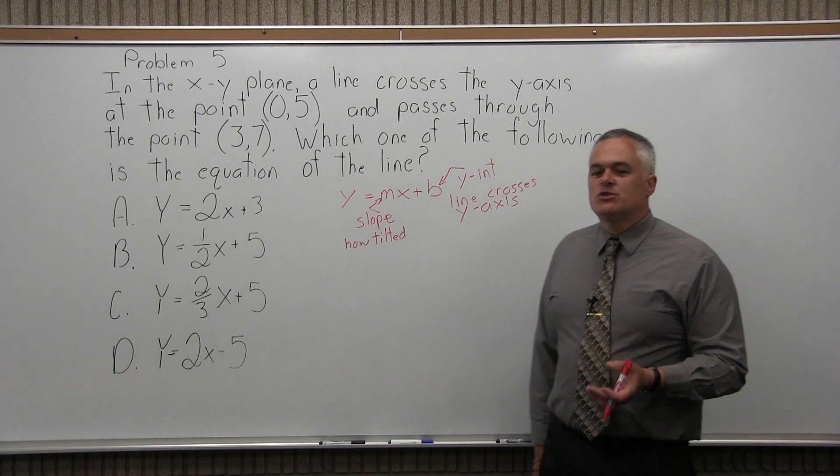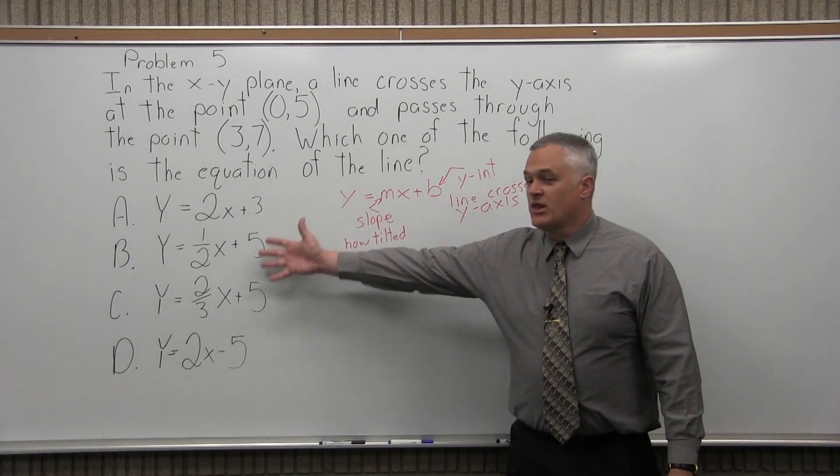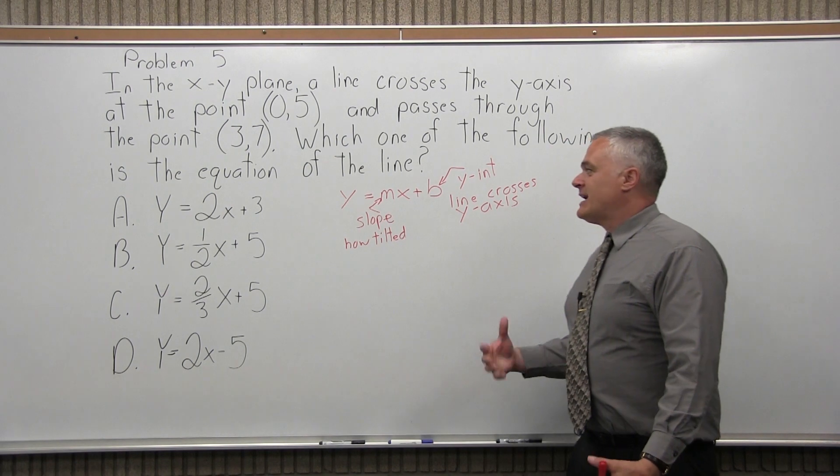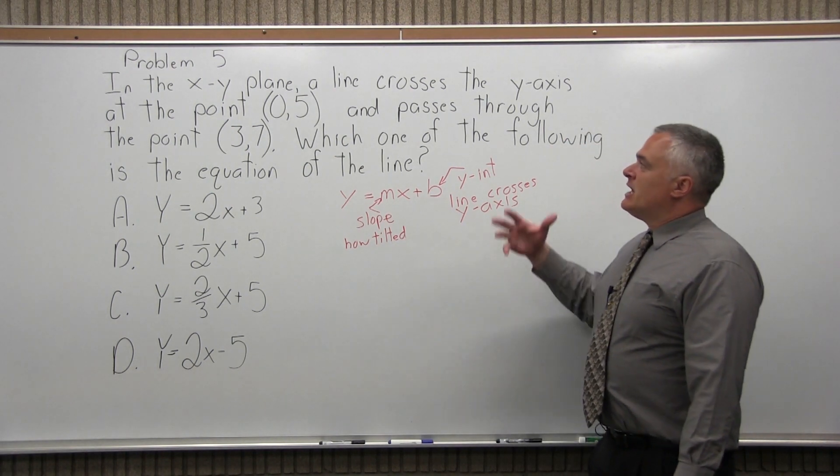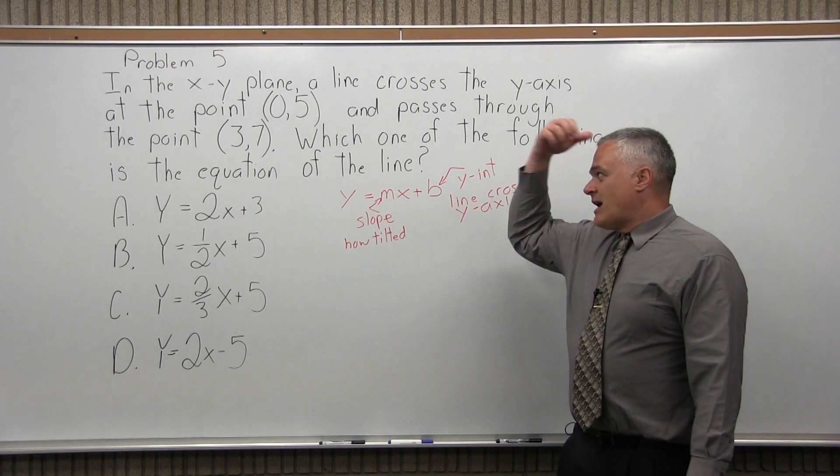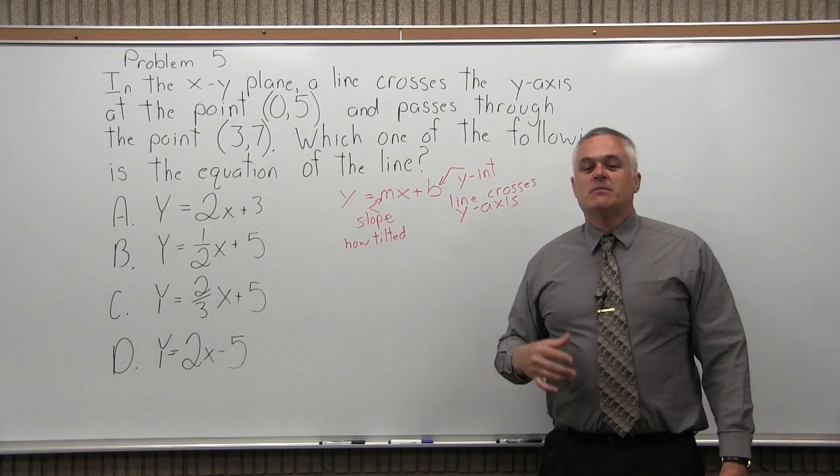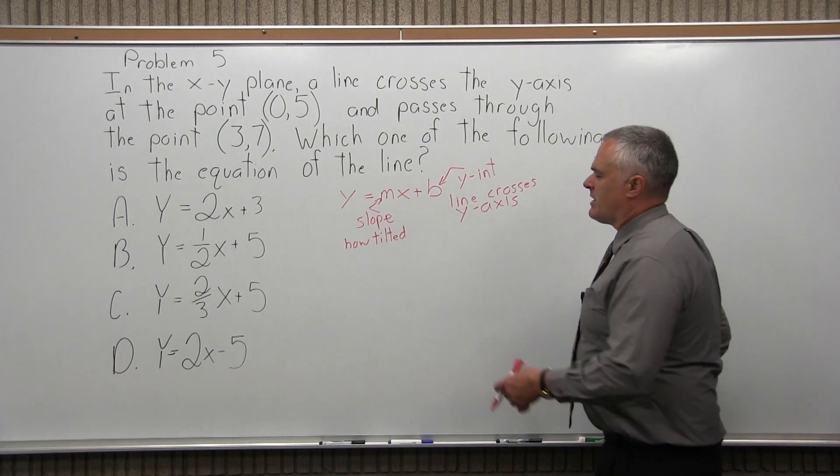So if you know these two things and you notice that they're all in that form, y equals mx plus b, that's how we're going to find the answer. Now the question doesn't suggest that you graph the line or require that you graph it, but I think it would help. Some people can see it more easily without the graph, but it's so easy to just sketch a quick graph.